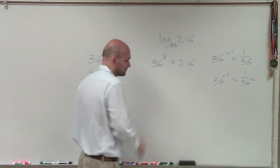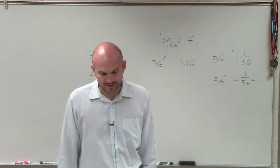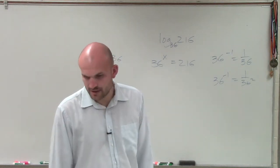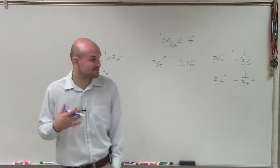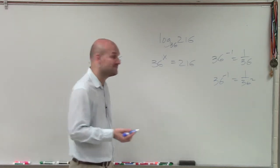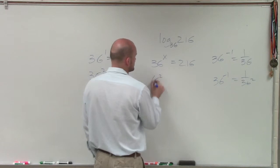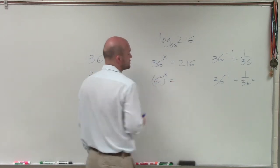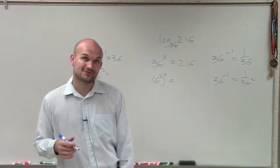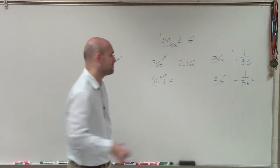And when looking at this, I know that base 2 is not going to work. Base 3 is not going to work. Base 4 is not going to work. Base 5 is not going to work. But base 6—I can rewrite 36 as 6 squared. And then when I go and check my mental calculator, 6 to the third power is 216.